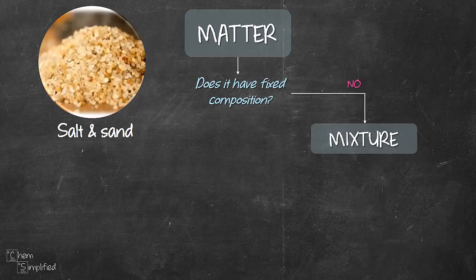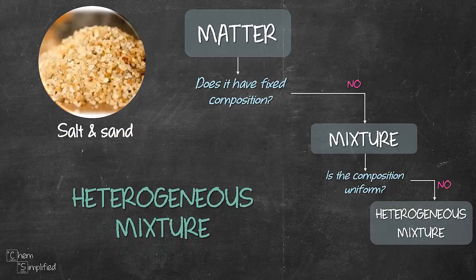And then we ask the next question, which is, is the composition uniform? Is it mixed well? Well, look at it. Do you see like some specks of white color here and there? And then some darker specks here and there? And some lighter in between colors? It's not mixed really well, right? Some parts have lighter color, some parts have darker color. So the composition is not uniform. Therefore, it's a heterogeneous mixture.